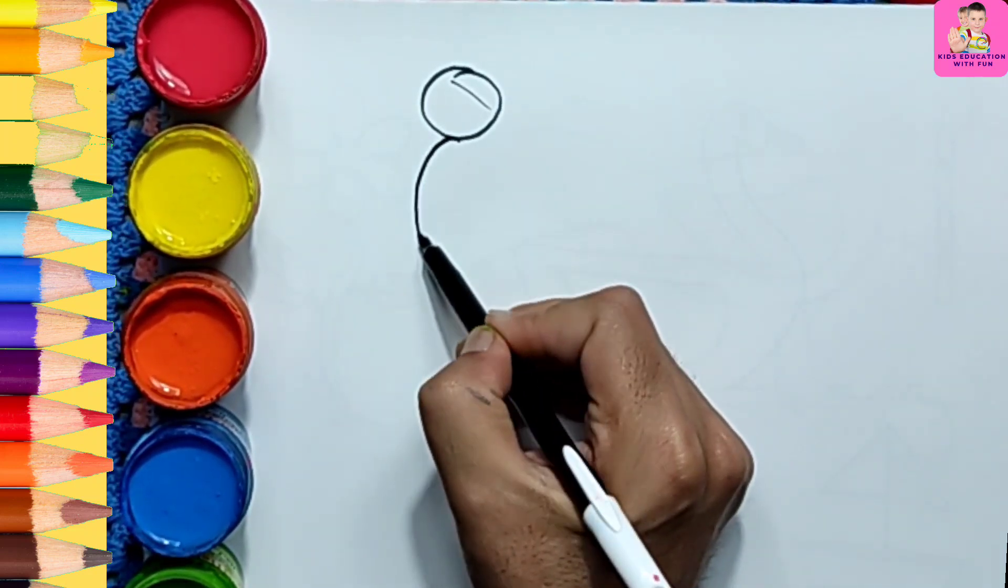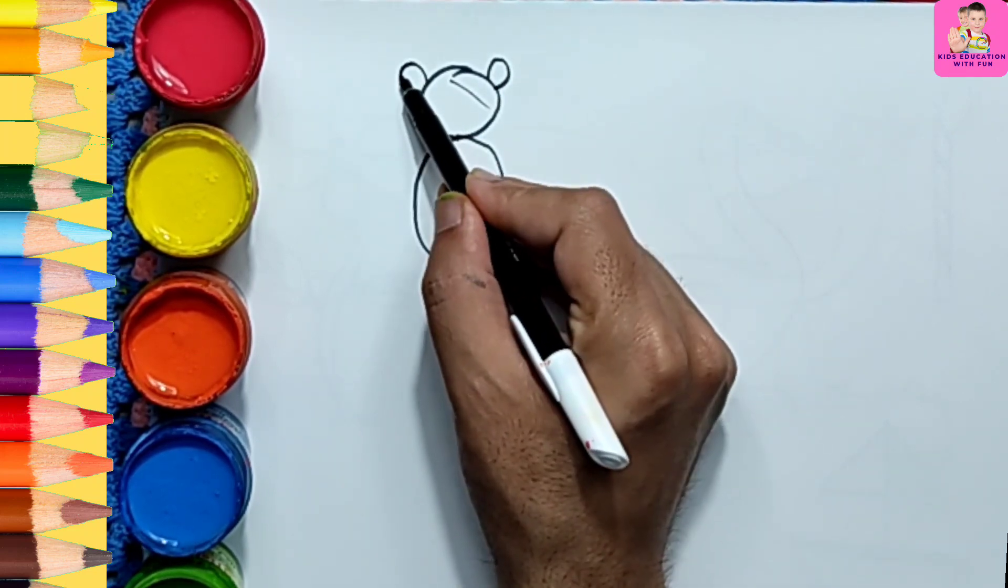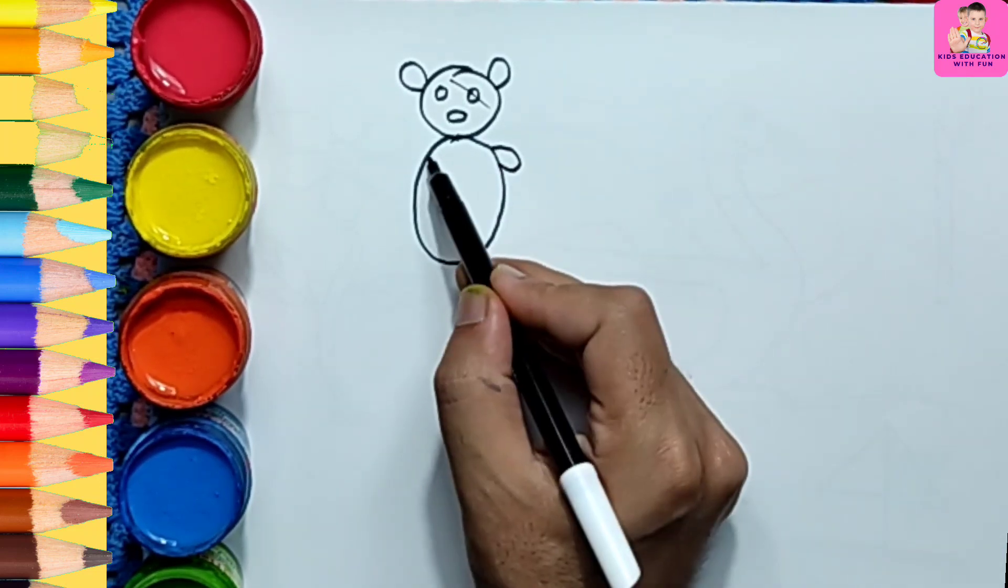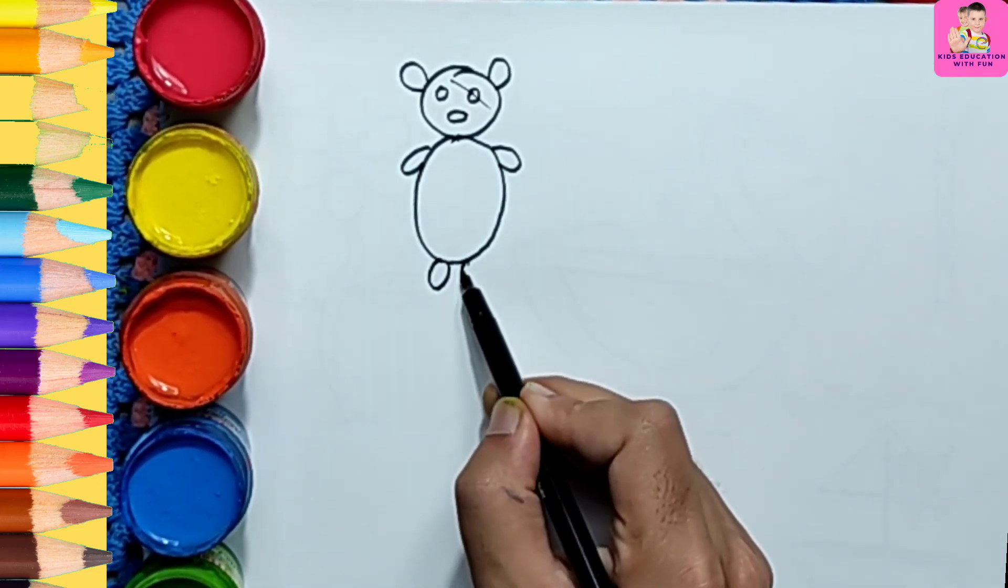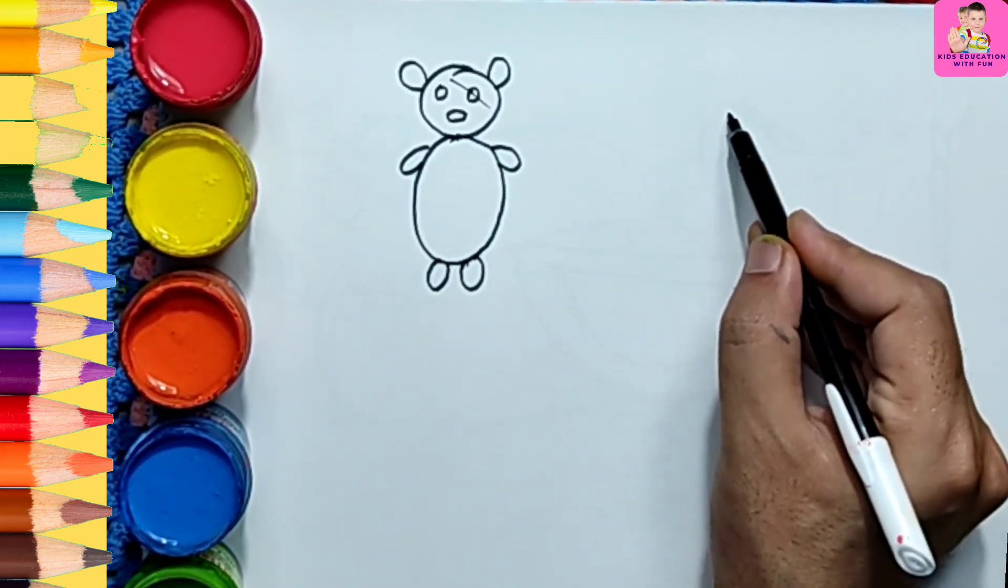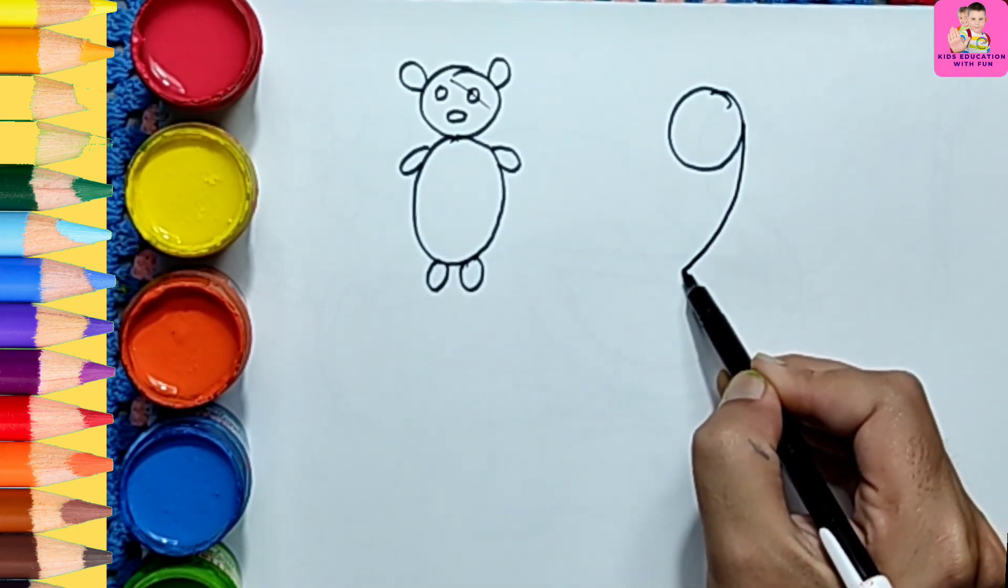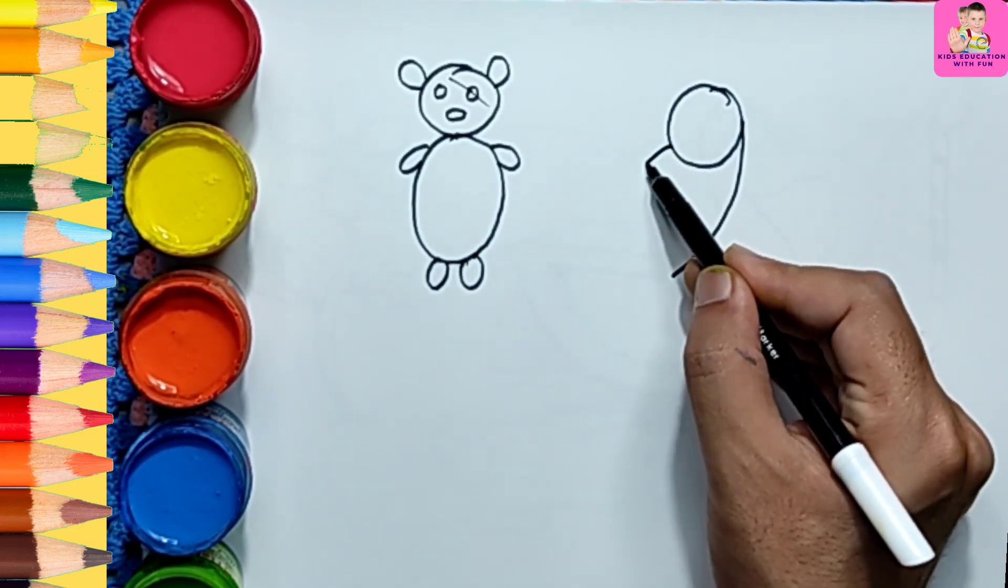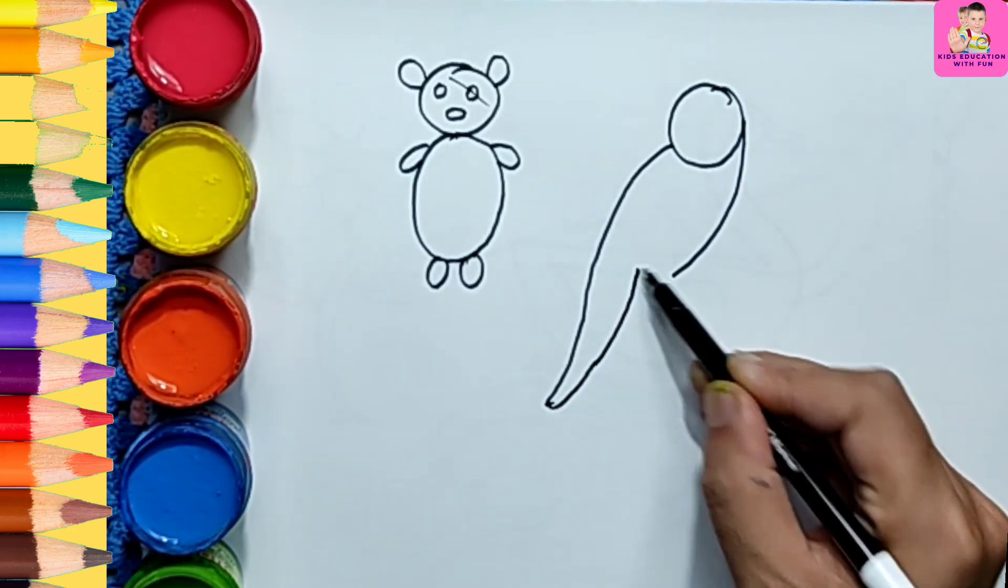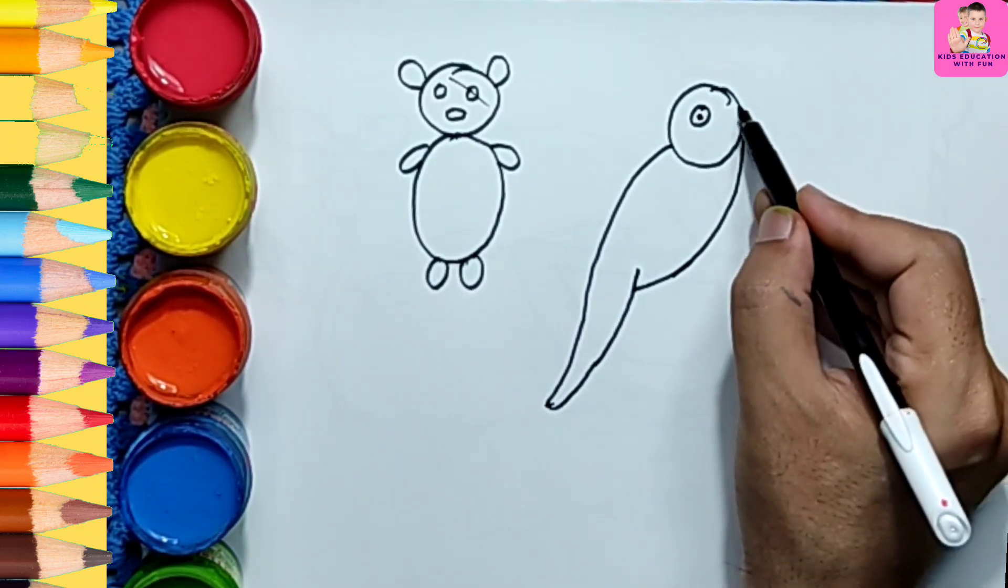Now we are going to draw 8. This is 9 - what is this? Oh, this is a parrot!